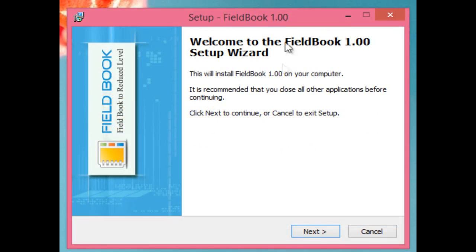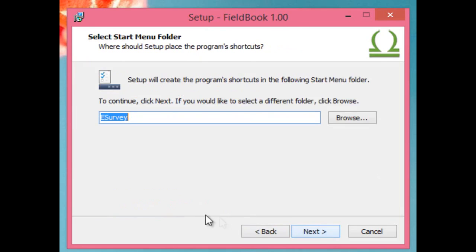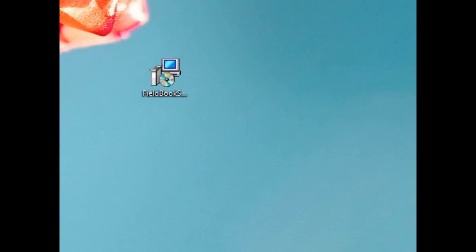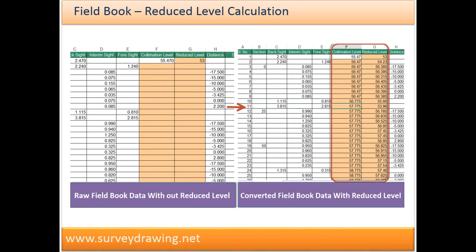The Field Book Conversion utility of eSurvey Civil Tools can be used to calculate reduced levels from field data collected from an auto-leveller, or to generate field book data from cross-section data. There are three types of calculations: A) Convert a raw field book Excel sheet to a field book sheet with reduced level. B) Convert a raw field book Excel sheet to an Excel sheet representing cross-section data. C) Convert an Excel sheet with cross-section data into a field book sheet.